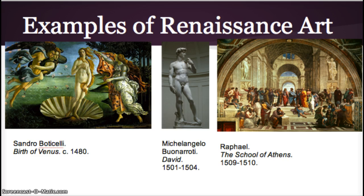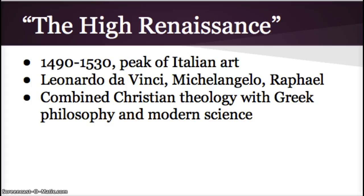Some examples include David, the School of Athens by Raphael, and the Birth of Venus by Sandro Botticelli. The High Renaissance was between 1490 and 1530, and it was the peak of Italian art, centered mainly in Florence, Rome, and Venice. The three major artists of this period developed a style that was calm, balanced, and idealized, combining Christian theology with Greek philosophy and modern science.